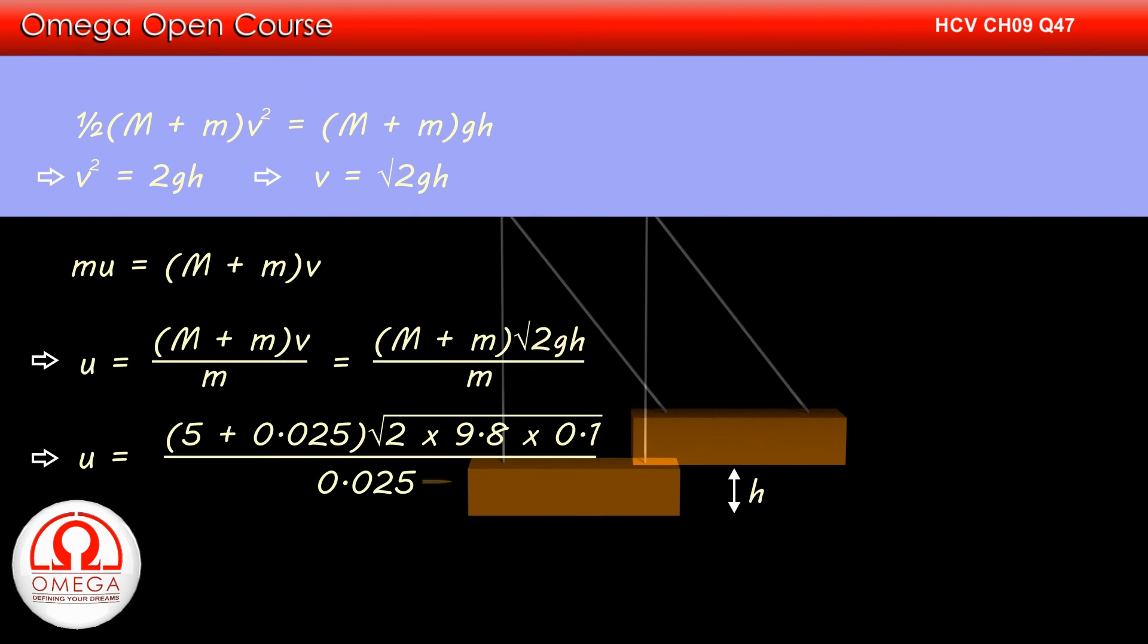we get u = (5 + 0.025)√(2 × 9.8 × 0.1)/0.025.